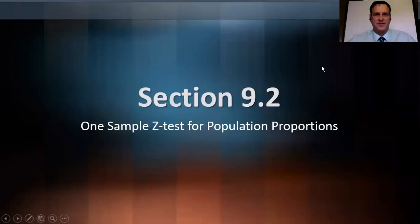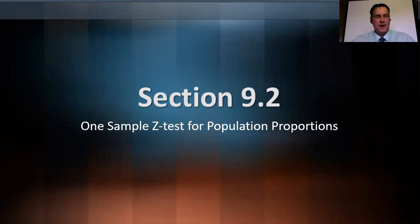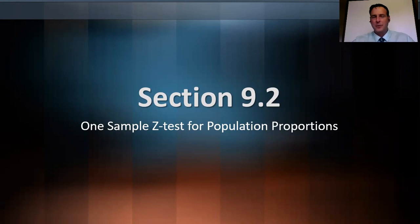Hello AP Statistics. This is section 9.2, one sample Z test for population proportions. I did skip section 9.1, but I'm going to include all that work in the sections after that, from 9.2 on. You'll need a normal distribution table today, your graphing calculator, paper, and a pencil. Let's get going.